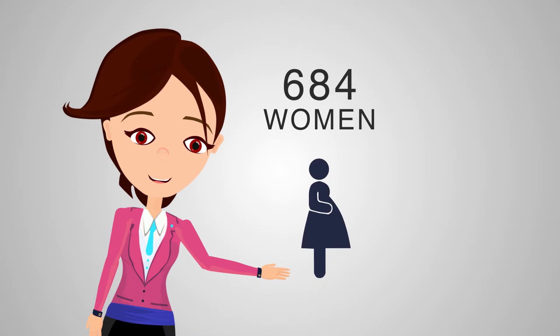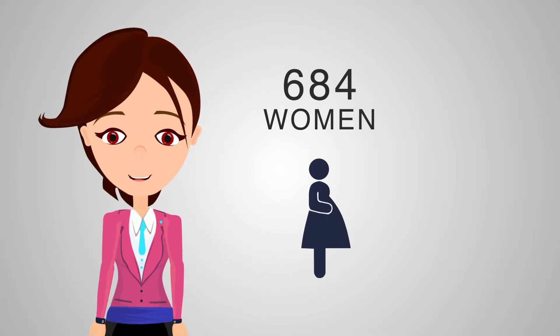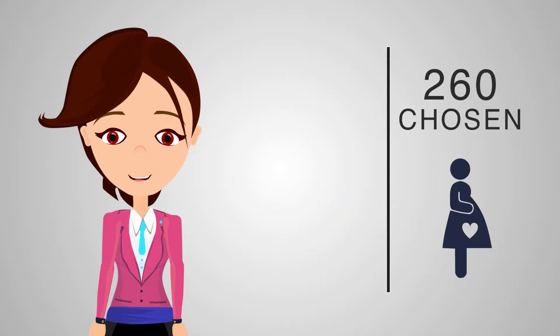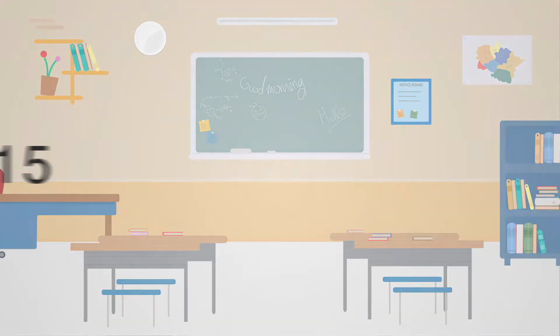The study involved 684 consecutive women scheduled for cesarean section that were screened for eligibility. 260 healthy women who met the inclusion criteria were enrolled in the study, and verbal and informed consent were taken. Randomization was performed in blocks of 20 to ensure that the same number of participants would be allocated to receive either of the two study treatments.